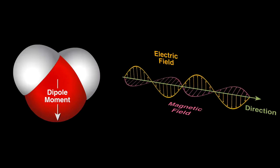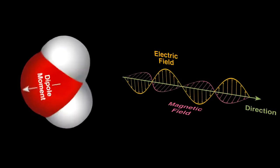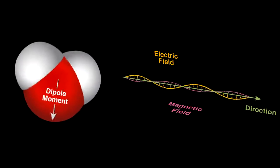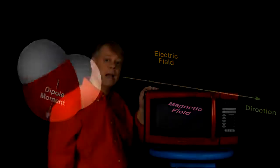Water will try to align with the radiation's electric field. The changing field rocks the water molecules back and forth rapidly, and molecular friction from this creates heat as the motion disrupts the hydrogen bonds between neighboring water molecules.